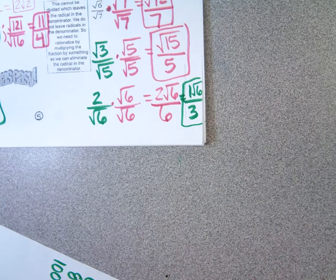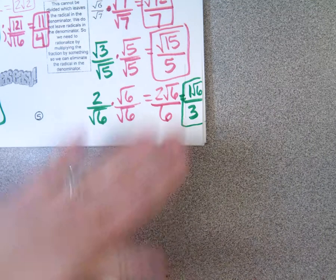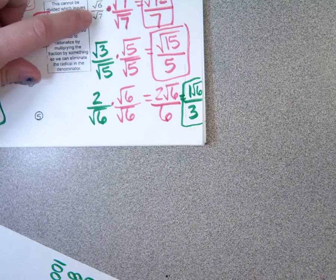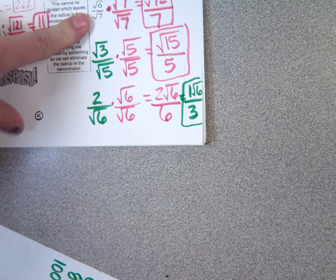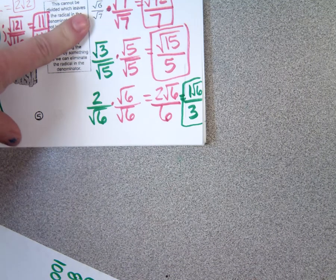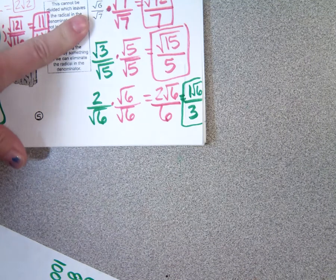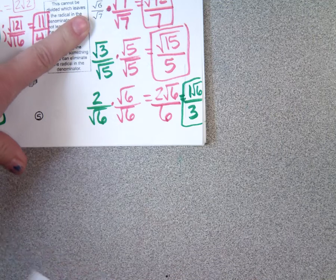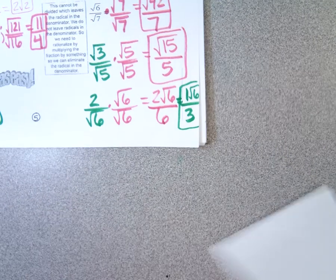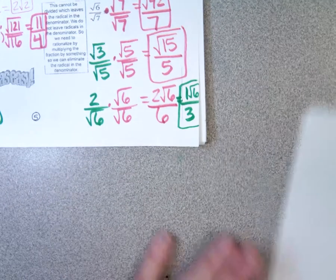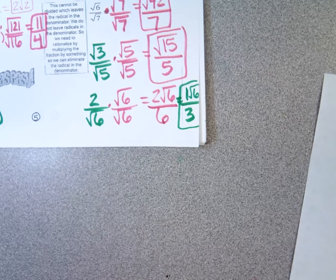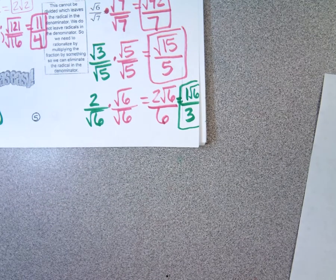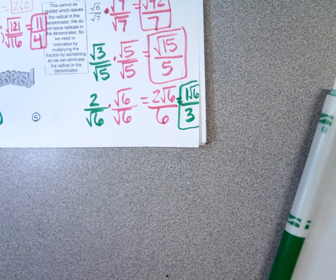That's the foo-foo — rationalizing the denominator — because you're never allowed to have a radical in the denominator. We're going to be doing that in the next few days with triangle problems. That's as far as I got with all my other classes, so we'll stop there.